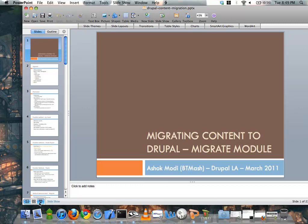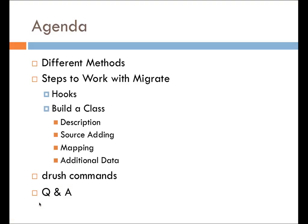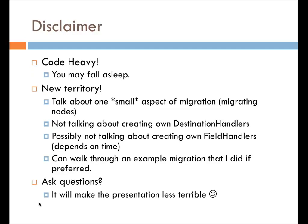Hi everyone. My name's Ashok, and I'm going to be talking about migrating content to Drupal using the Migrate Module. I'm going to glance over a few different methods you can do it, but I'll mainly focus on how to get everything to work using the Migrate Module, some of the Drush commands that work with this, and a Q&A session if there's time. I wanted to add a disclaimer: this presentation is somewhat code-heavy, and you may fall into a coma as a result. This is new territory for me in terms of presentation material, and I'm only talking about one small aspect of the migration part, which is migrating nodes.